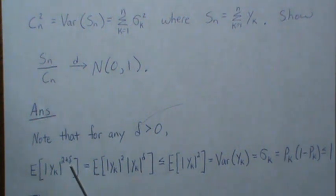So note: first note that for any delta greater than zero, we have that the expected value of Yk raised to 2 plus delta is equal to—well we split them up and this piece right here is less than or equal to one, so if we get rid of it we just increase the quantity. But the expected value of Yk squared, since the mean is zero, that's the variance.